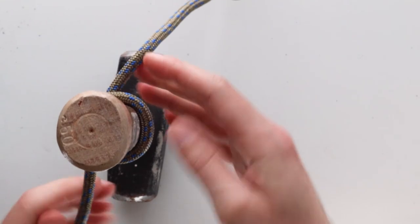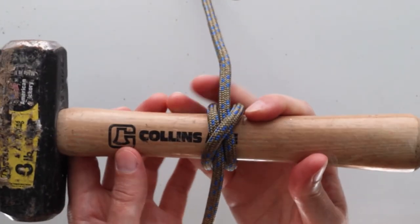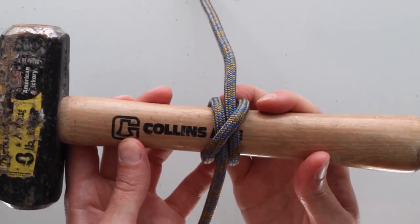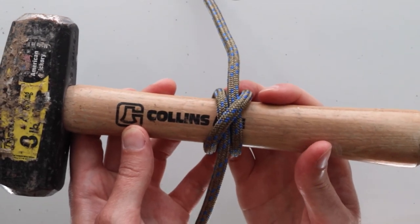Once you've done this, I'll turn it sideways so you can see you have a clove hitch that looks very much like the clove hitch we made using the previous method.